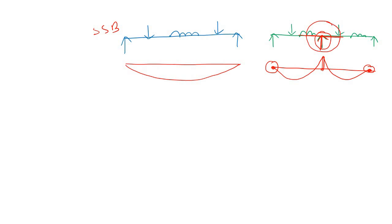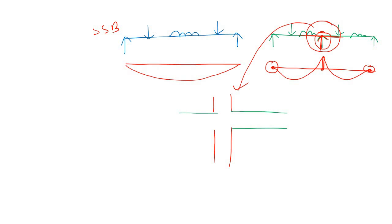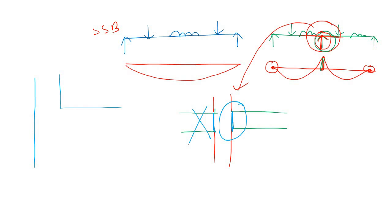At this beam-column junction, the column is vertical and the beam connects over it. We have a bending moment at this support. Considering just one face of this junction, we have the column on either side and the beam connecting across. Due to this bending moment, there will be a tensile force at the top and a compressive force at the bottom.